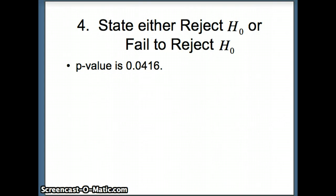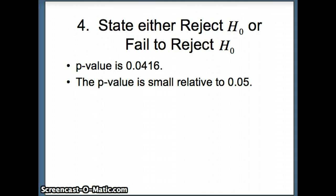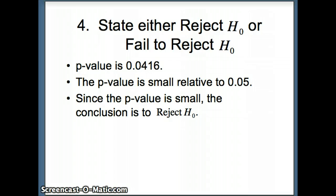Now we decide whether to reject H₀ or fail to reject H₀. The question is whether the P-value is small. We define small as 0.05, and 0.0416 is indeed smaller than 0.05, so we reject H₀. The reasoning: assuming H₀ is true, the probability of getting a sample as extreme as this one is small, suggesting the null hypothesis may not be correct and we have evidence for the alternate hypothesis.